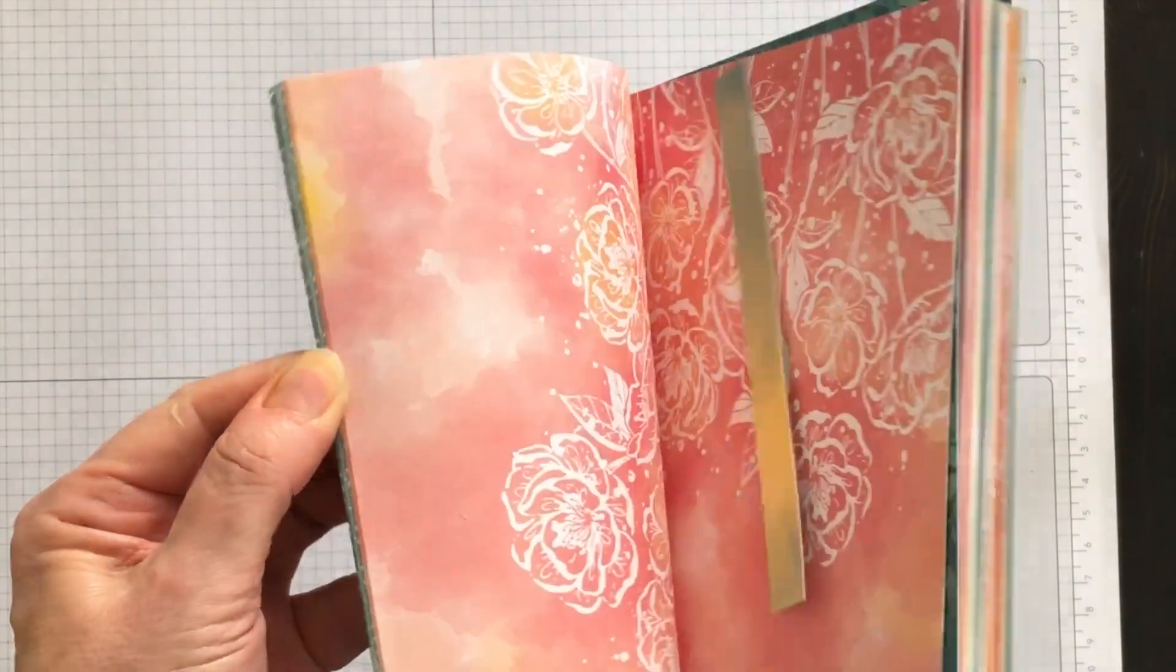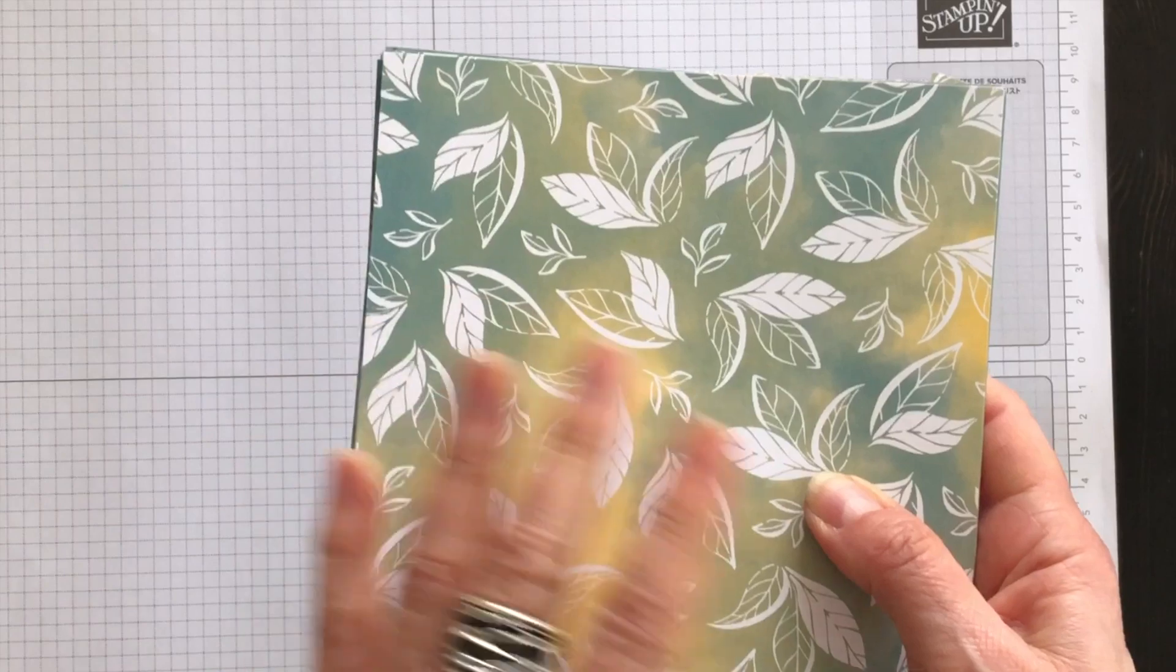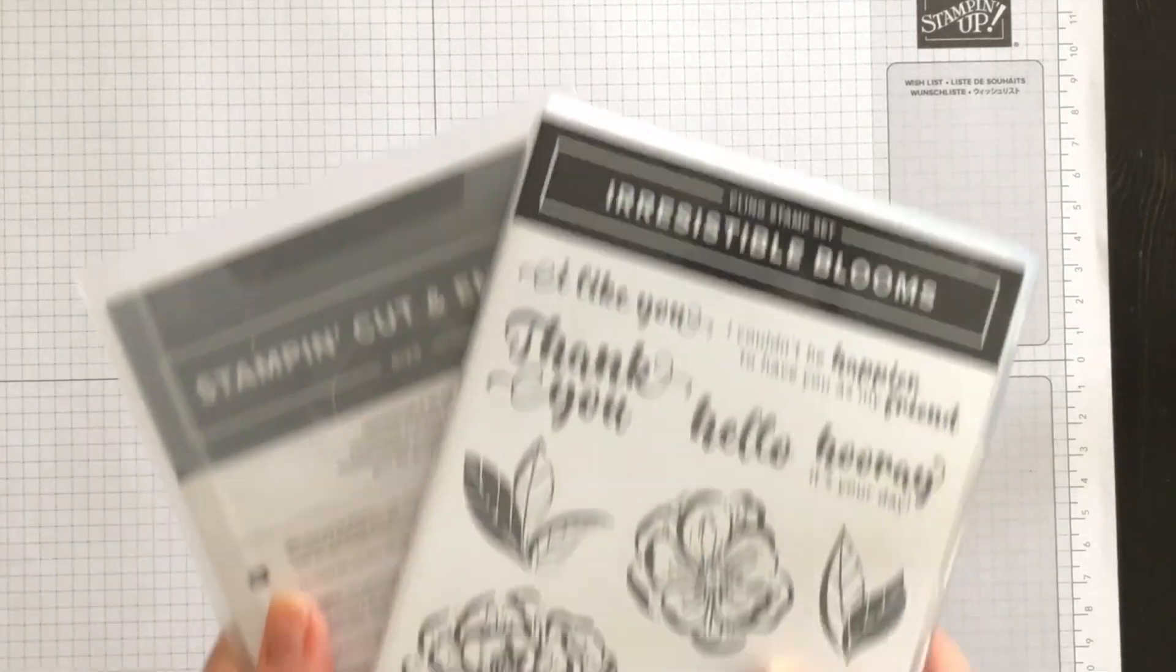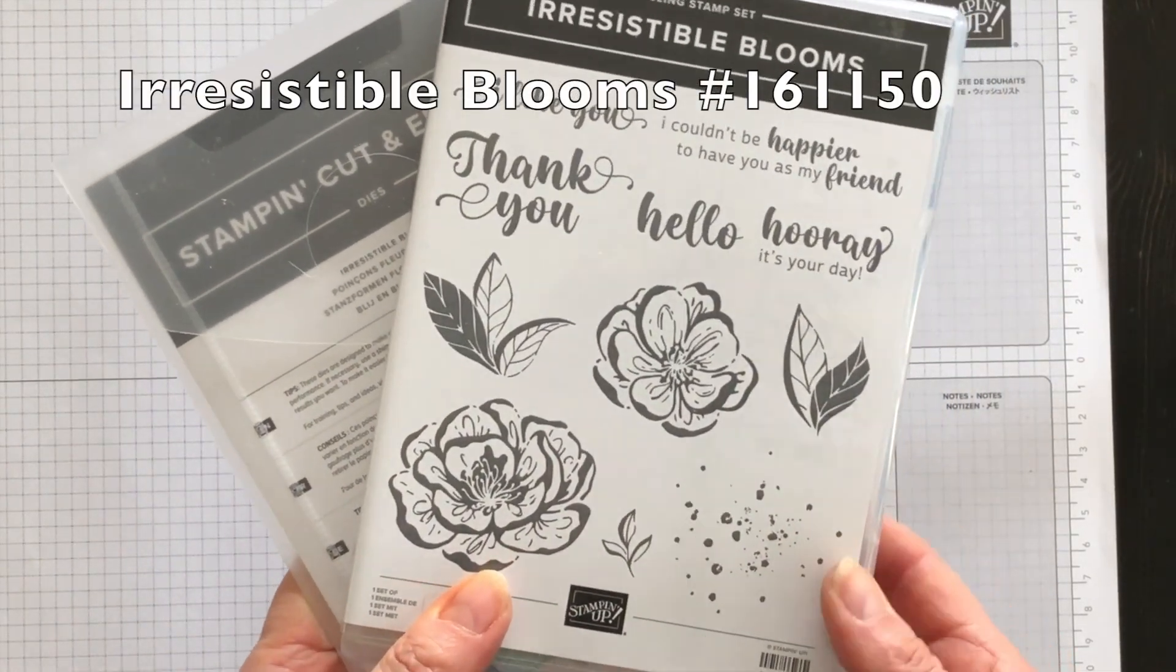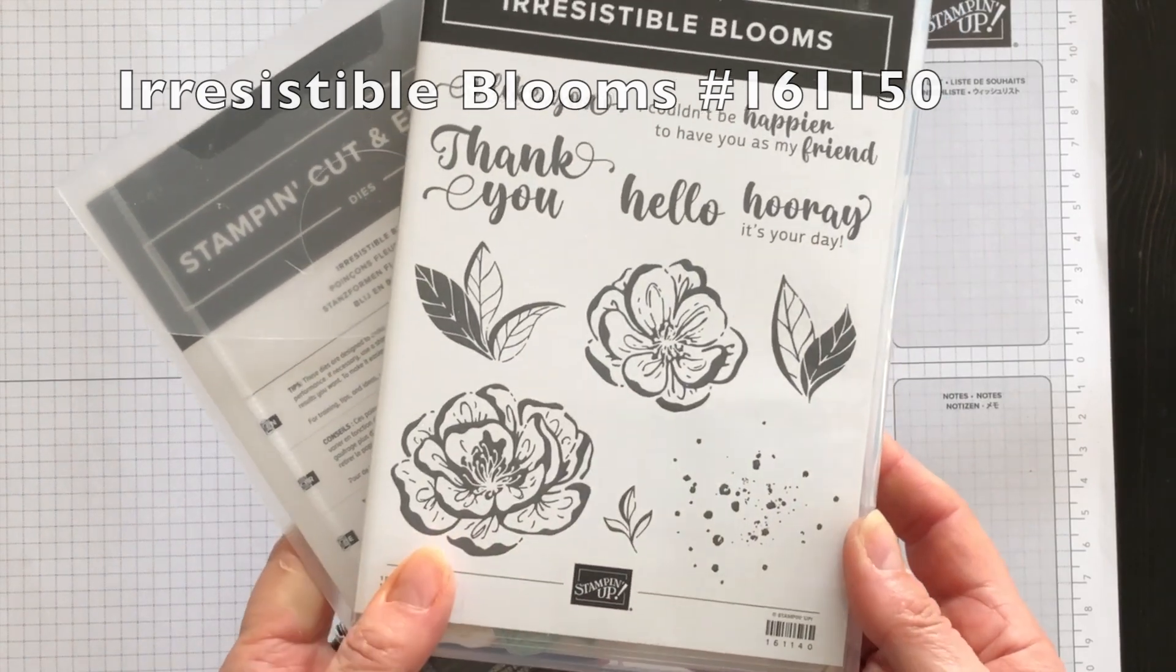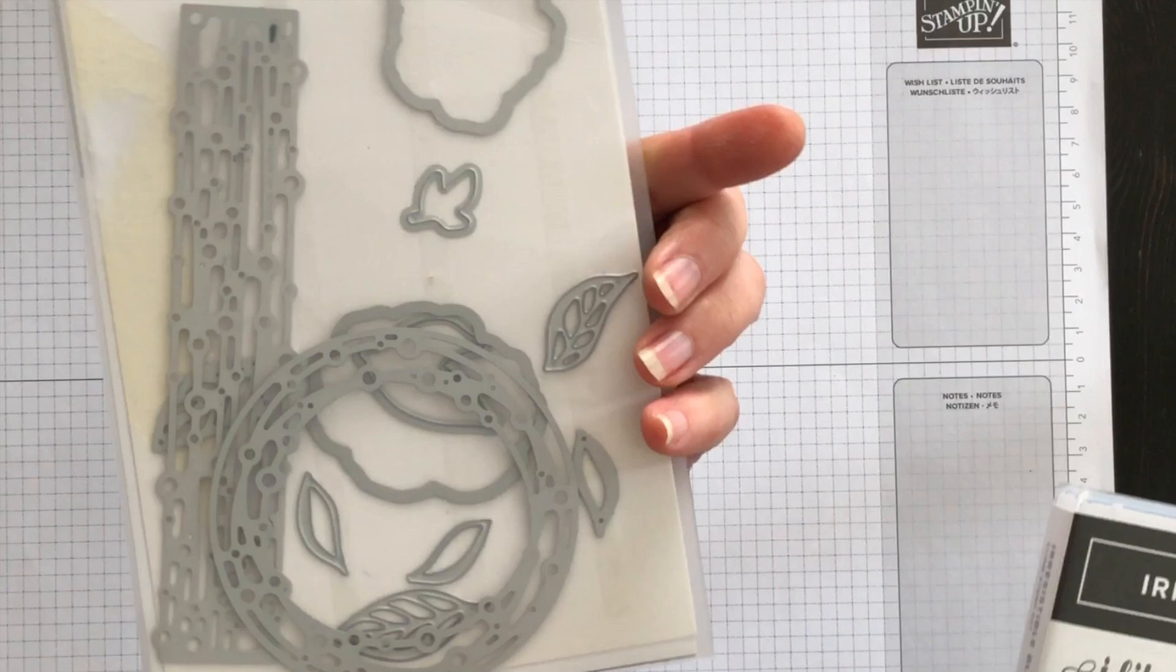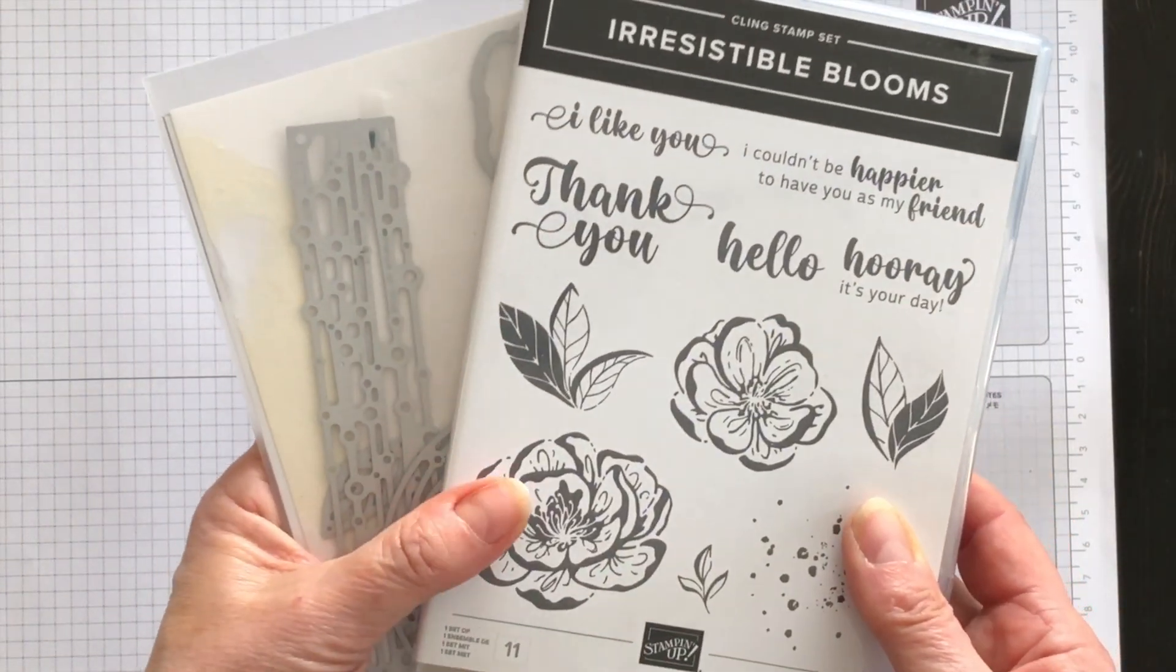And look at those designs. Very fun. And you get so many sheets in a pack, you'll be crafting with it for months to come. I'm also going to be using the new Irresistible Blooms bundle, which also features gorgeous floral designs and sentiments in an elegant font. And there's some of the corresponding dies that go with the stamp set.